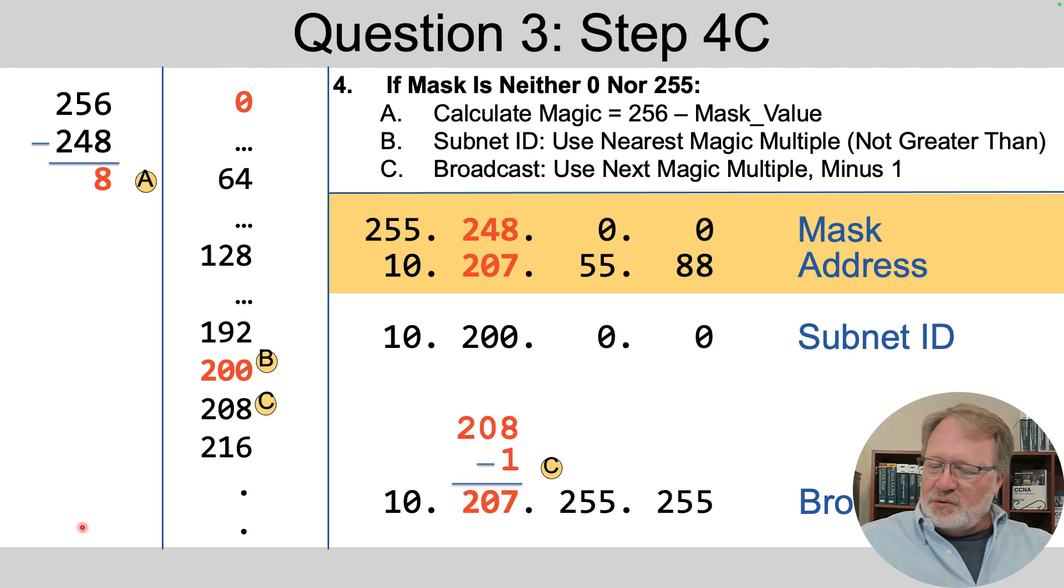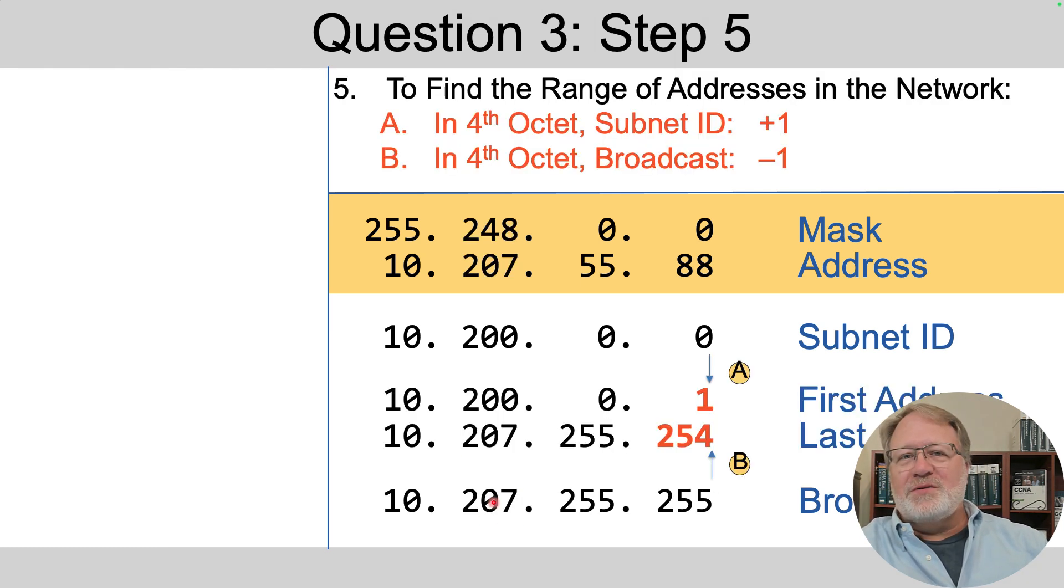And then we take the next multiple, 208, for the subnet broadcast address, minus one to get 207. So the next multiple, minus one. Armed with those numbers, then it's just a matter of adding one to the subnet ID's fourth octet and subtracting one from the broadcast address's fourth octet to find the usable address range.